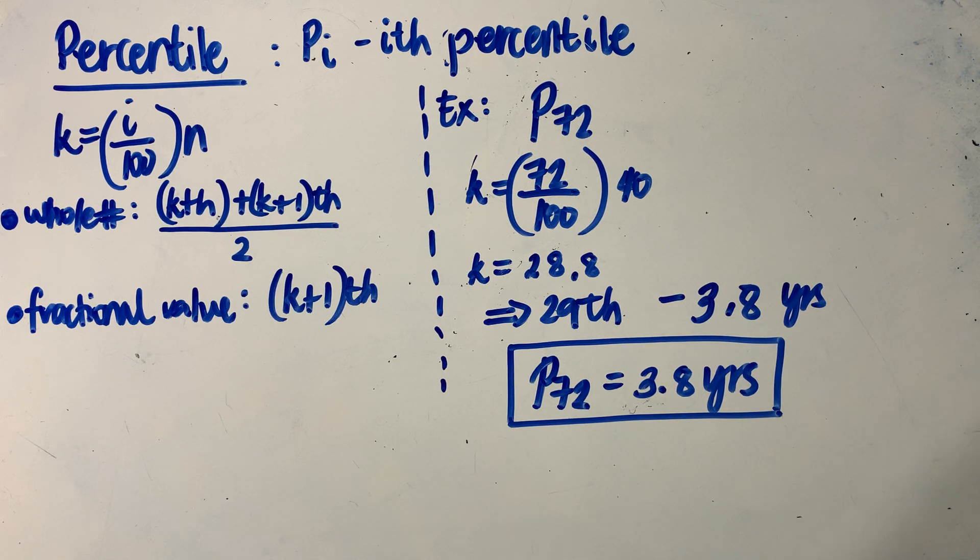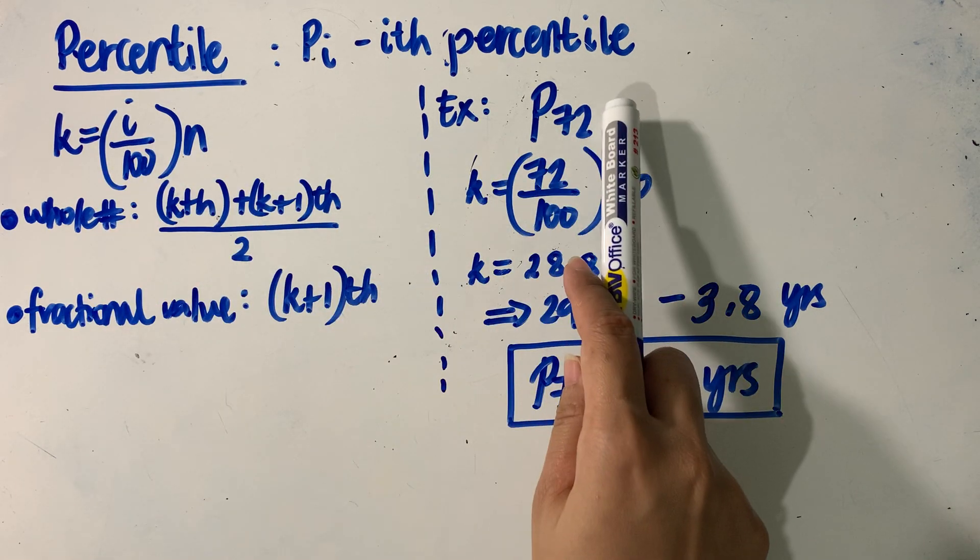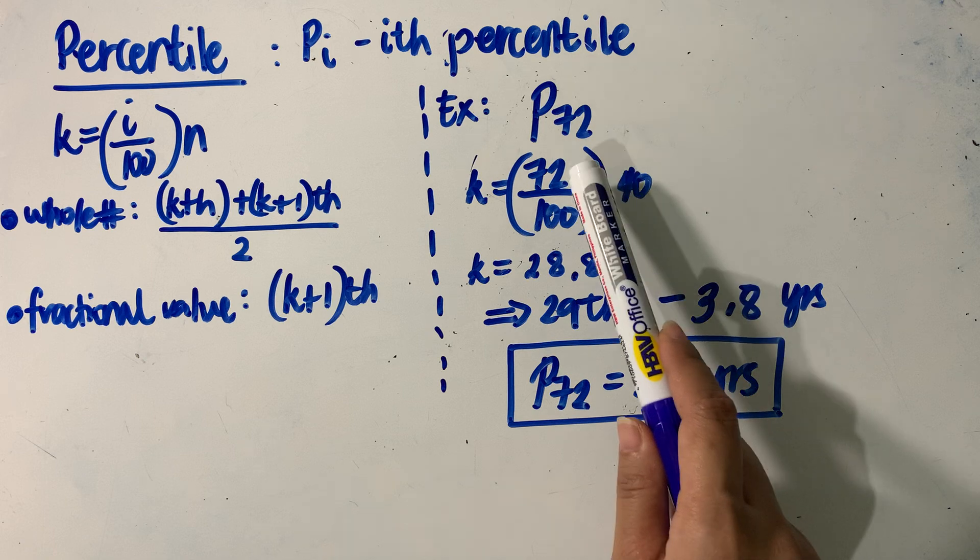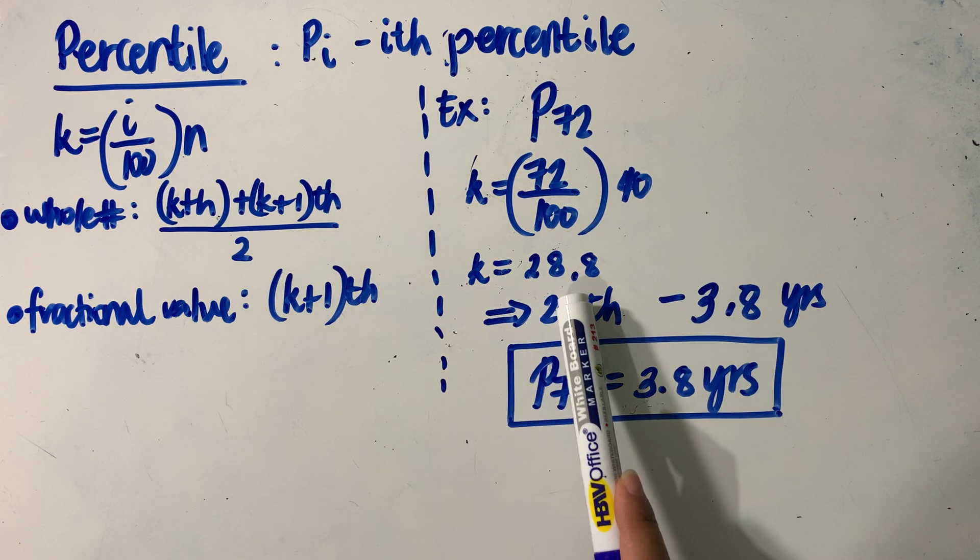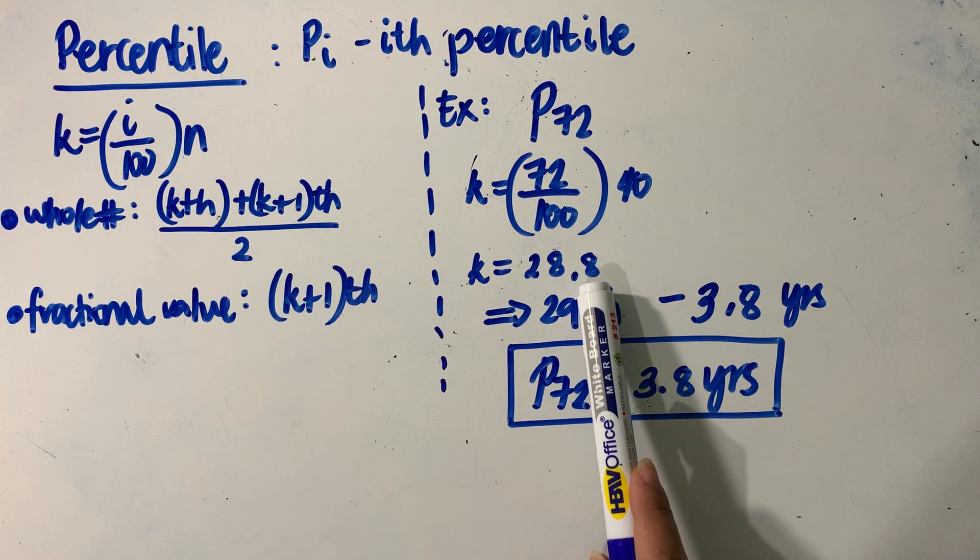We need to compute the corresponding value of K. When i equals 72, using our formula, that would be 72 over 100 times 40, which gives us K equal to 28.8.